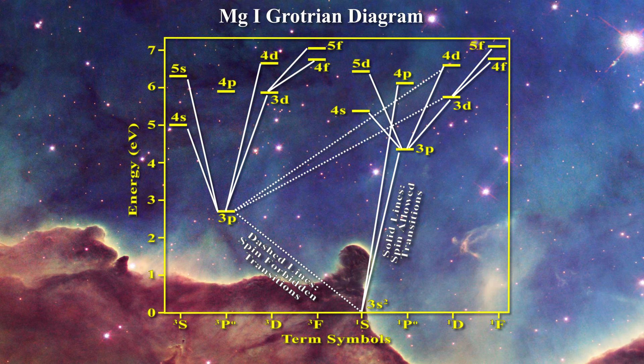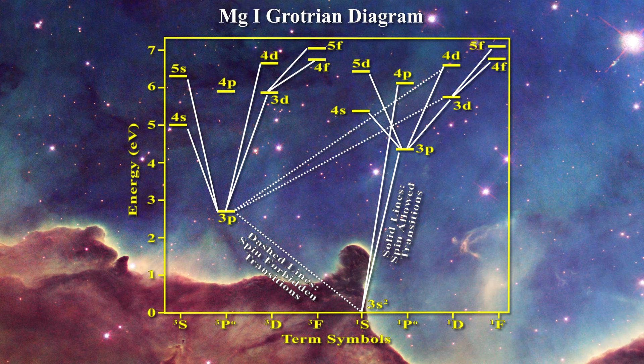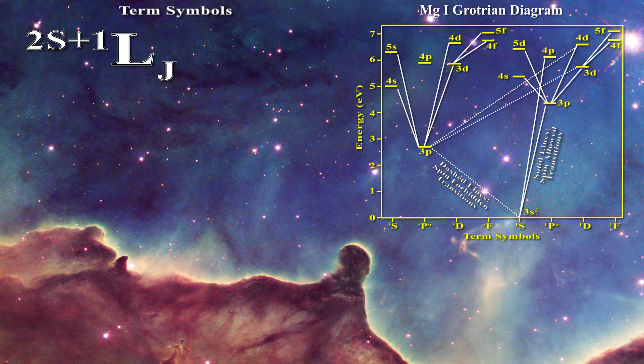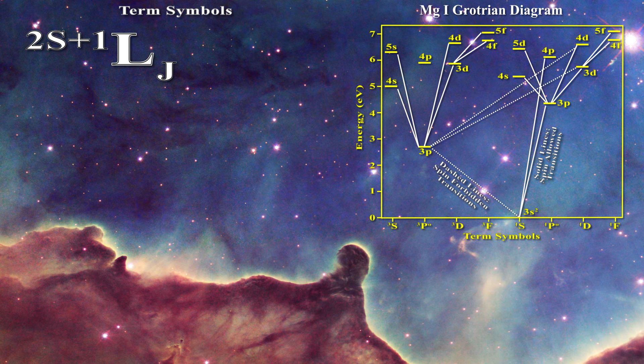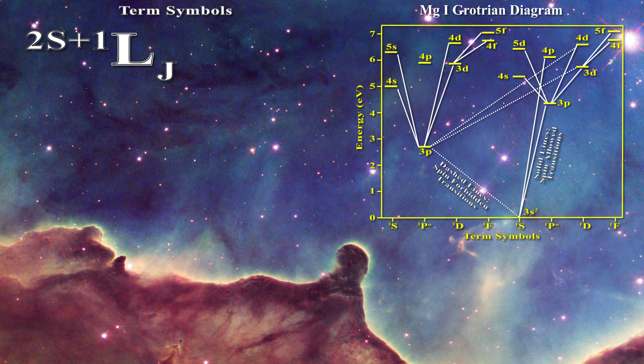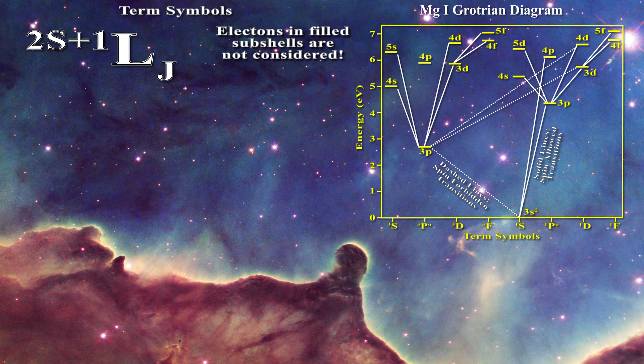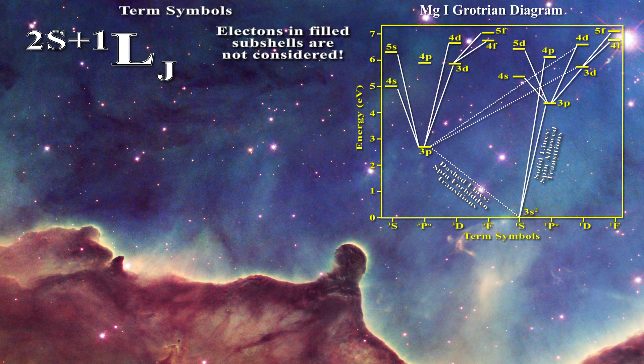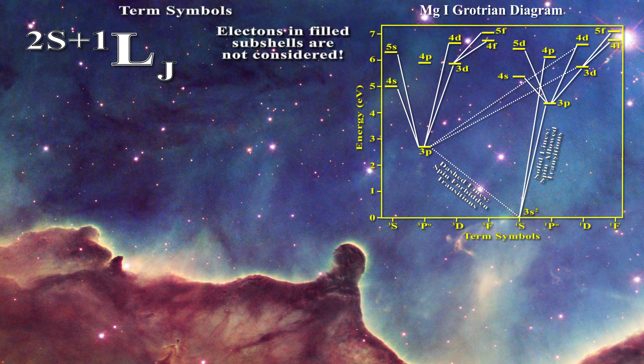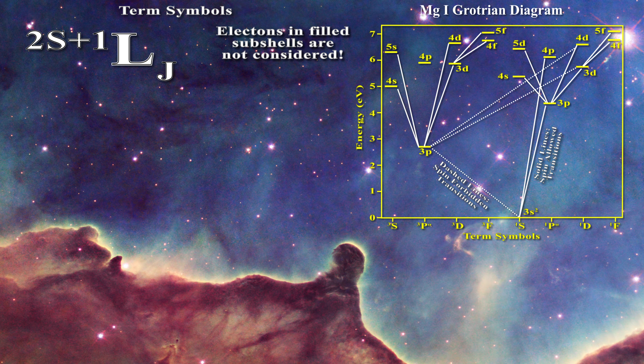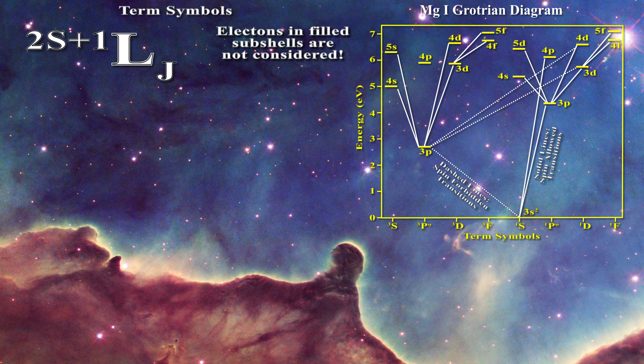At the bottom of the Grotrian diagram, term symbols are listed. A term symbol is typically represented in a specific manner. Term symbols provide a means to summarize every aspect of the electronic configuration of the atom — whether electrons are paired or not in a given shell and what shells are occupied. In determining the value of a term symbol, electrons occupying filled subshells are not considered.